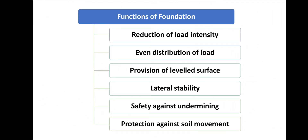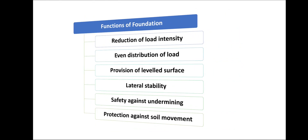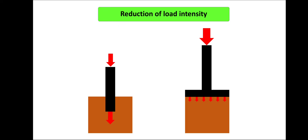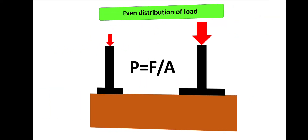Now let's see the functions of foundation — there are five to six functions: load intensity reduction, proper distribution, provision of a level surface, stability against lateral forces, safety against undermining agents, and protection against soil movement. For load intensity reduction: below a column with no expanded base, the load is concentrated. When a flat, larger-area foundation is provided, the concentrated load is distributed over a greater area, preventing shear or puncture failure of the soil. This is how load intensity is reduced.